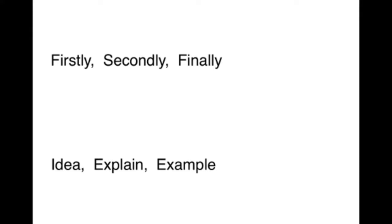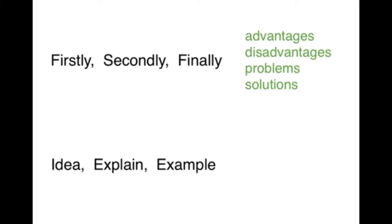I'm going to suggest two types of main body paragraph for Writing Task 2. The first type I call 'Firstly, Secondly, Finally,' and the second type I call 'Idea, Explain, Example.' We can use Firstly, Secondly, Finally when we have more than one idea. This type of paragraph is perfect for advantages, disadvantages, problems, solutions — any type of question where we need to give more than one idea. On the other hand, if we only have one idea for that paragraph, we have to explain it in more detail. In that case, I would use the second type: Idea, Explain, Example. This is perfect when you have one idea, one reason, one opinion — you're going to have to explain it a lot more than if you had two or three ideas.